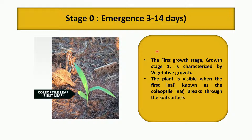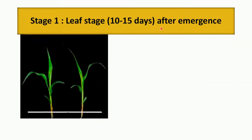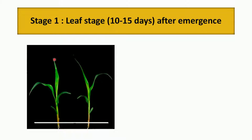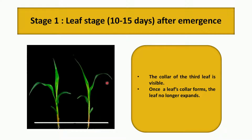Now let us discuss about the leaf stage, which takes 10 to 15 days after emergence. If you observe this picture, you will notice that the color of the third leaf is visible. Once the leaf color forms, the leaf no longer expands. In this stage, three leaves are fully expanded with a visible color, and the growing point is under the soil surface.